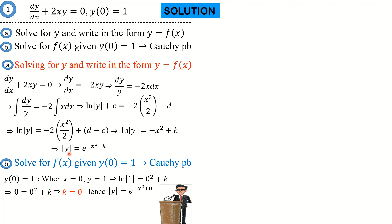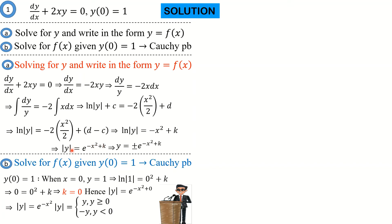We can rewrite the equation as the absolute value of y equals e raised to the power negative x squared plus 0, which simplifies to e raised to the power negative x squared. The definition of the absolute value of y is important here: |y| equals y for y positive and negative y for y negative. So we rewrite the equation replacing |y| with plus or minus y.